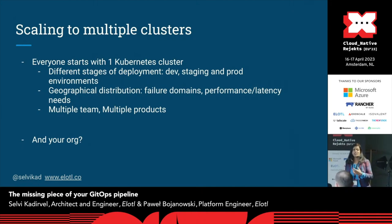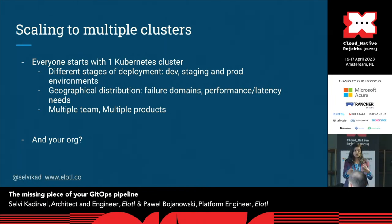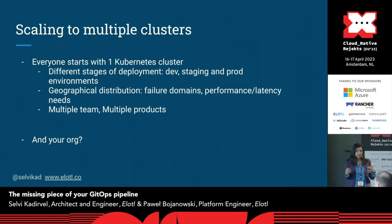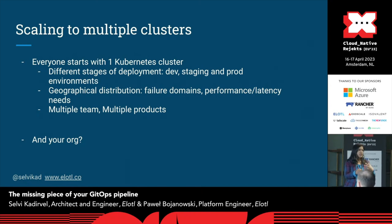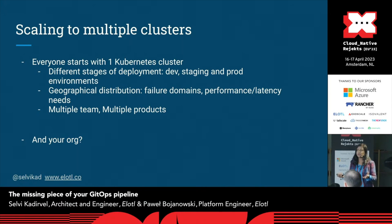In everyone's Kubernetes journey, we start with one single cluster, and soon it's just not sufficient. At the very least, you have a dev cluster, a QA cluster, a staging, and a prod cluster. Soon your application becomes really important — you want it geographically distributed for performance, latency, or failure domain needs. Once your application can't be developed by a single team, different teams build different microservices that need to interoperate, creating a need for multiple Kubernetes clusters. I've been in teams where we brought up a cluster for every single PR, and also teams where the entire team shared a single cluster isolated by namespaces.